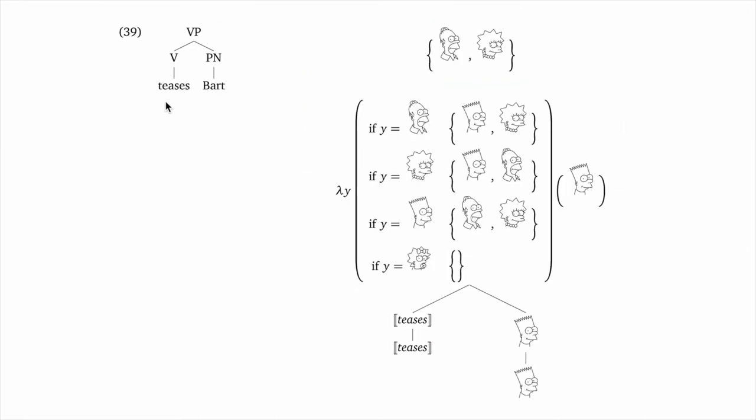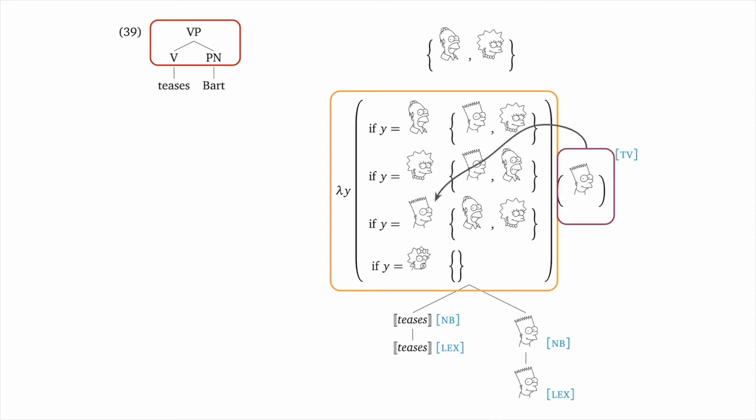Let's do a transitive verb case. And this too will involve function application. We use lex and NB to get to the top with the tree rooted at VP and children V and PN. Then the V meaning applies to the PN meaning. And we sort of look that one up in the meaning of teases and we ultimately derive the set containing Homer and Lisa. The set of entities that tease Bart.